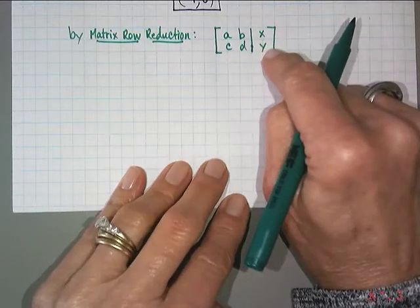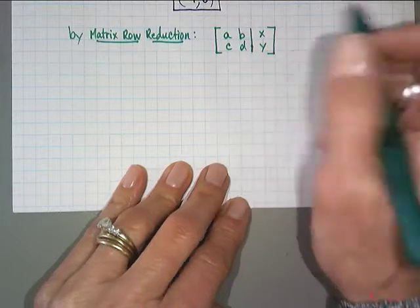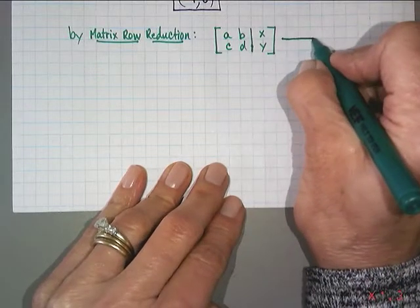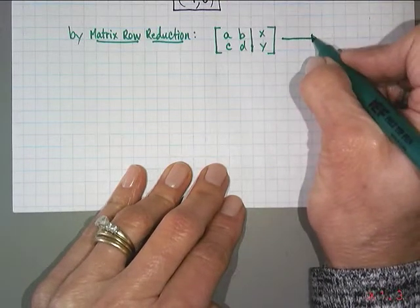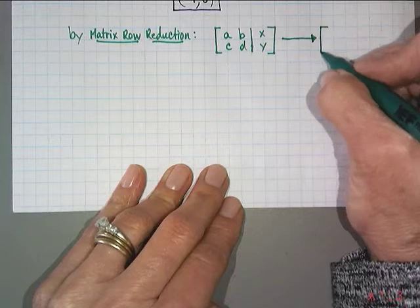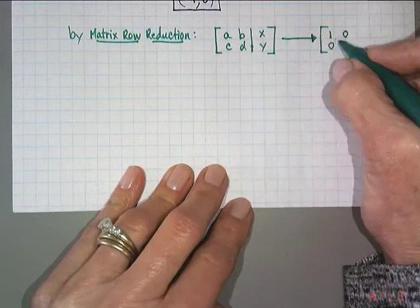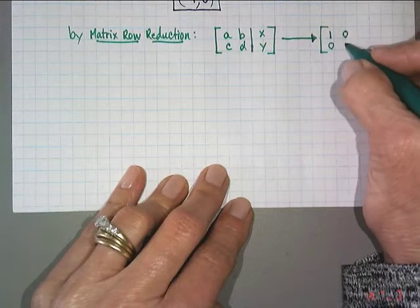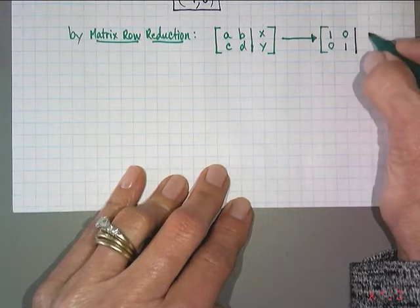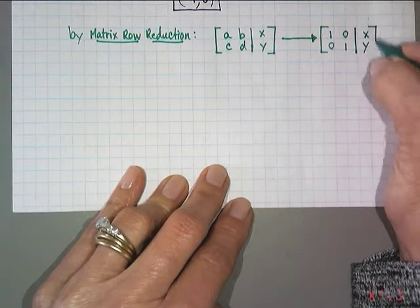X and y are going to be the solutions for x and for y. Your goal is to augment this matrix and turn it into what we call the identity matrix. So if you can change these values a b c d into the values 1 0 0 1, then you'll know what your x and your y values are that make that system true.